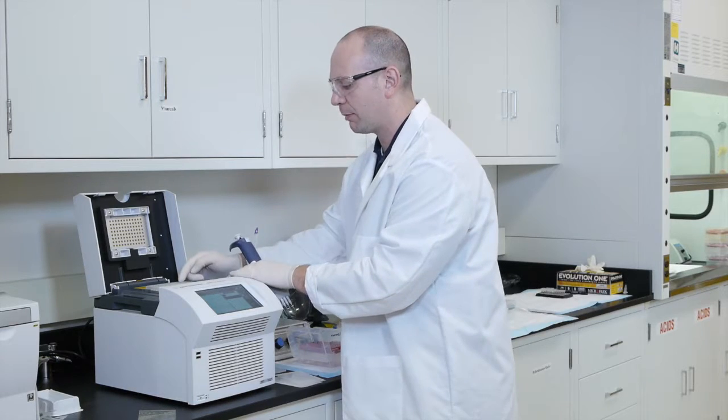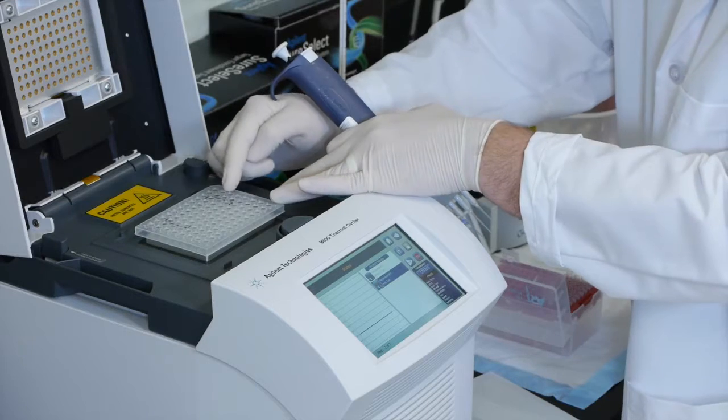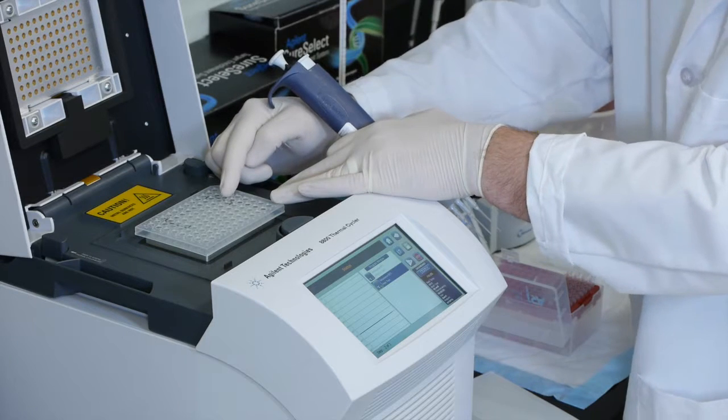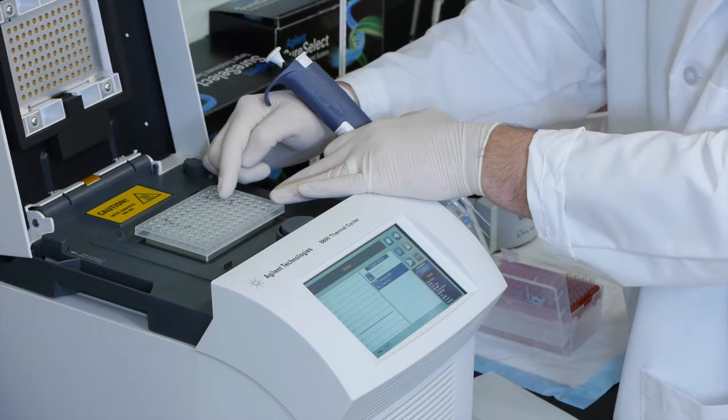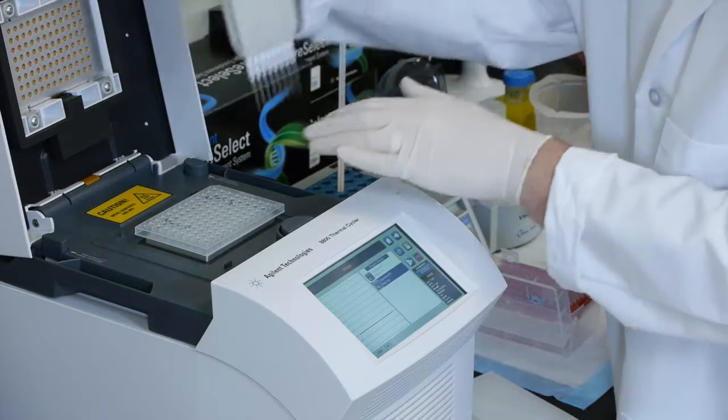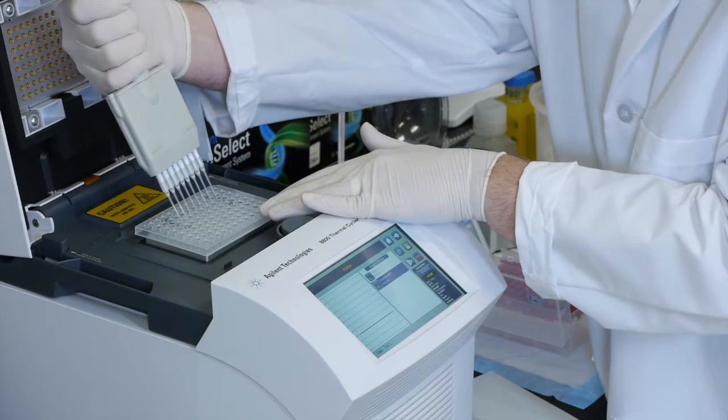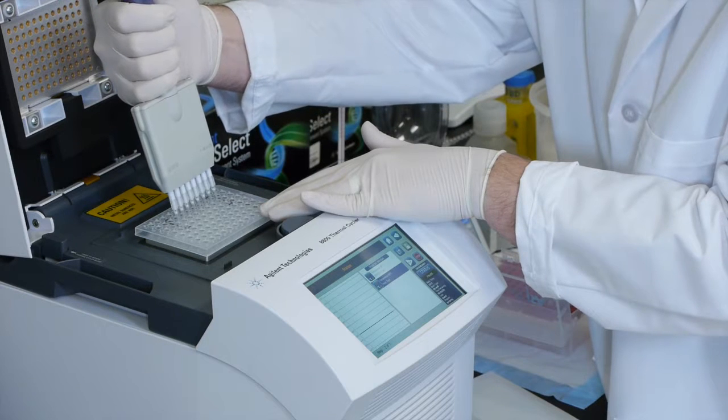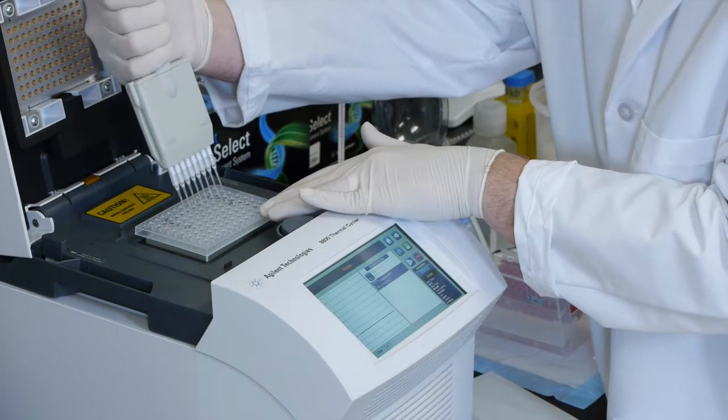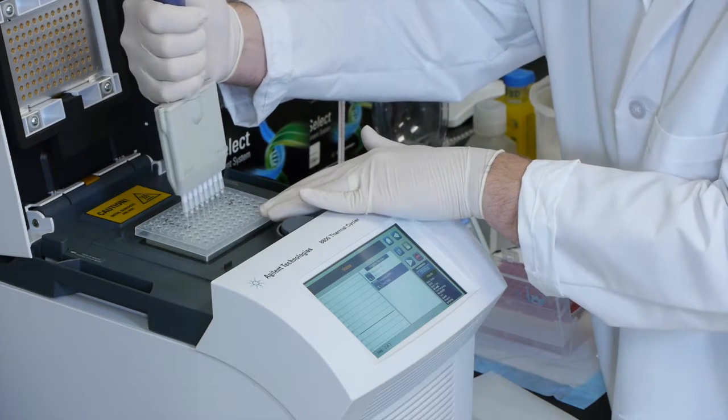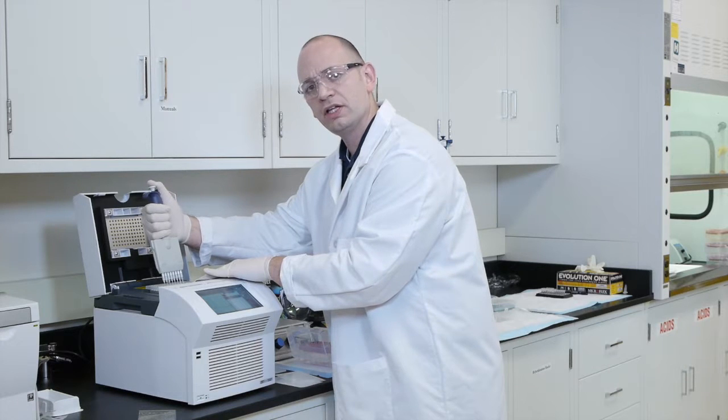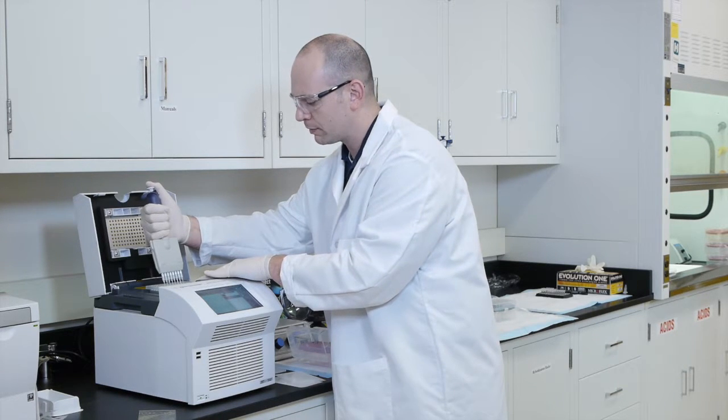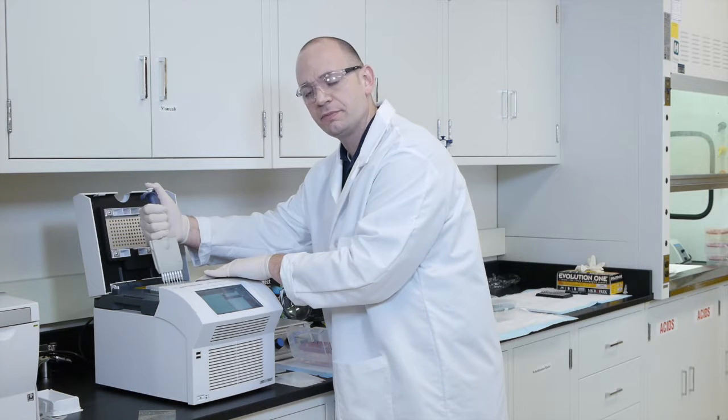So what we've done is we've transferred hybridization buffer from this row to this row. Now we're going to transfer the contents of the middle row to the bottom row. You'll then mix this thoroughly at least eight to ten times. And then upon completion of this mixing, you're going to carefully reseal the plate using a double PCR seal.